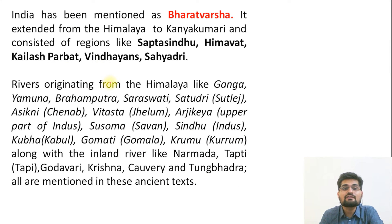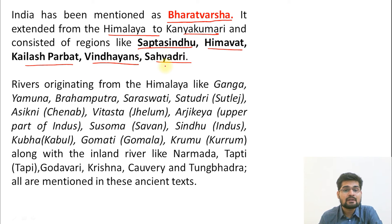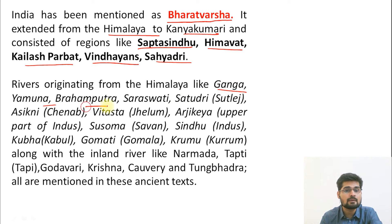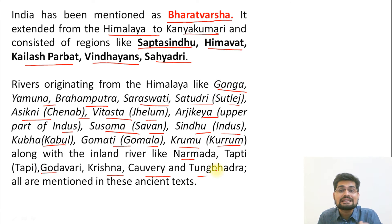The description of India in the ancient texts uses the name Bharata Varsha. Its extent is mentioned from the Himalayas to Kanyakumari, consisting of regions like Saptasindhu, Himavat, Kailash Parvat, Vindhyas, and Sahyadri. Rivers are also described: Ganga, Yamuna, Brahmaputra, Saraswati, Shatudri (Satlaj), Asikini (Chenab), Vitasta (Jhelum), Arjikeya (upper Indus), Susom (Savan), Sindhu (Indus), Kumbha (Kabul), Gomati (Gomala), and Kurmu (Kuram), as well as Narmada, Tapi, Godavari, Krishna, Kaveri, and Tungabhadra — a detailed descriptive physical geography of the subcontinent.